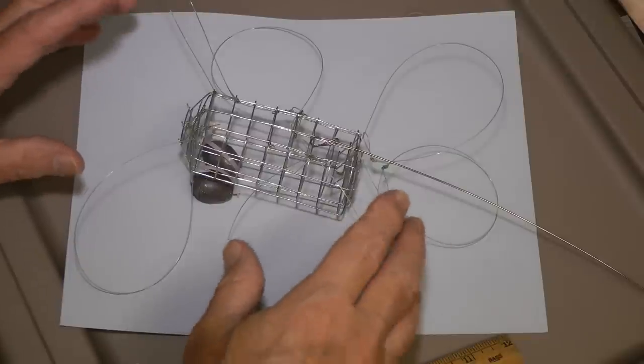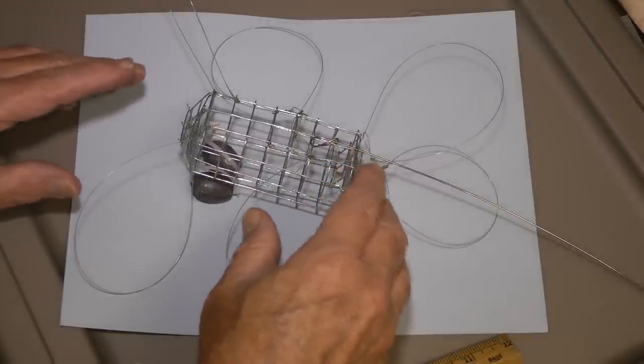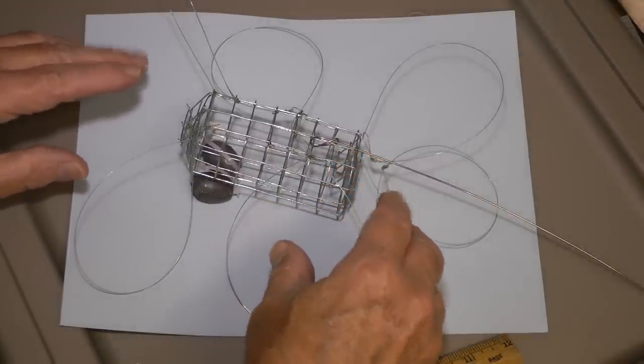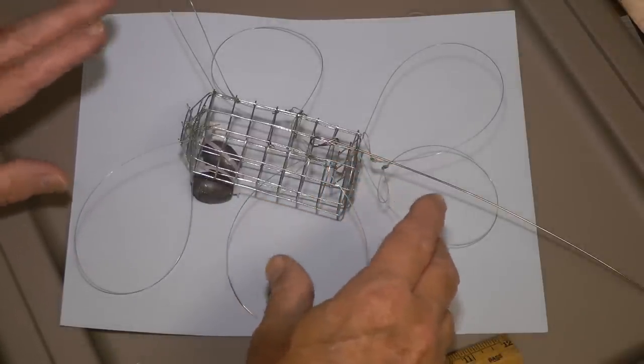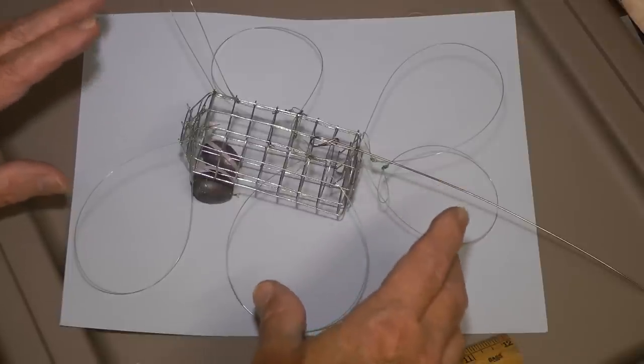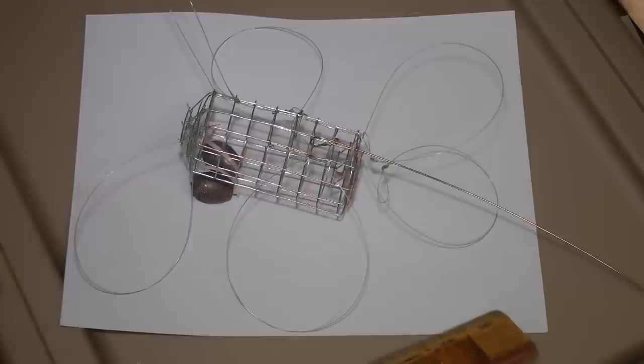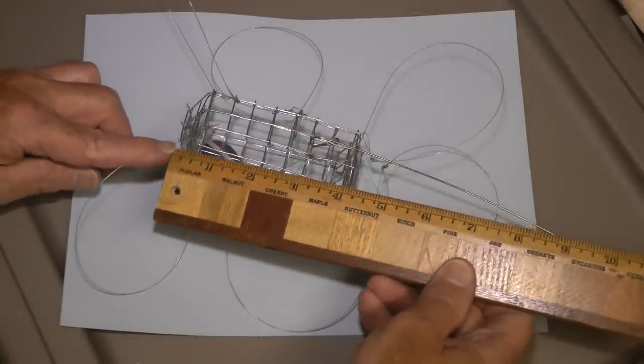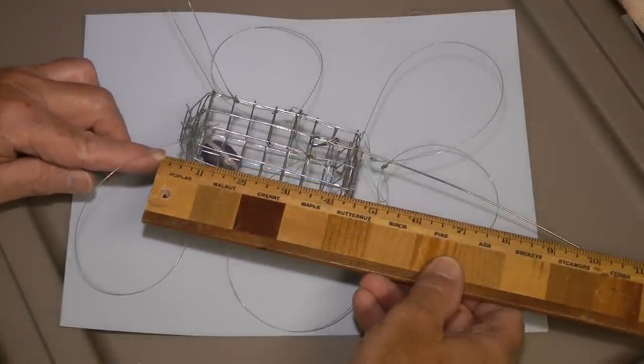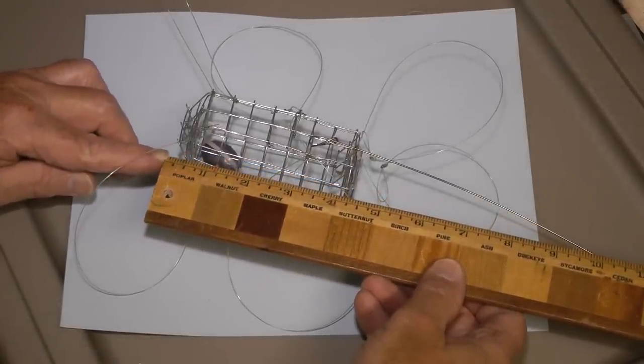This is a downsized version from the kind they use in California for Dungeness crab, which are very big. Blue crab are a little bit smaller, so you need something downsized. They get $15 a piece for these with shipping.